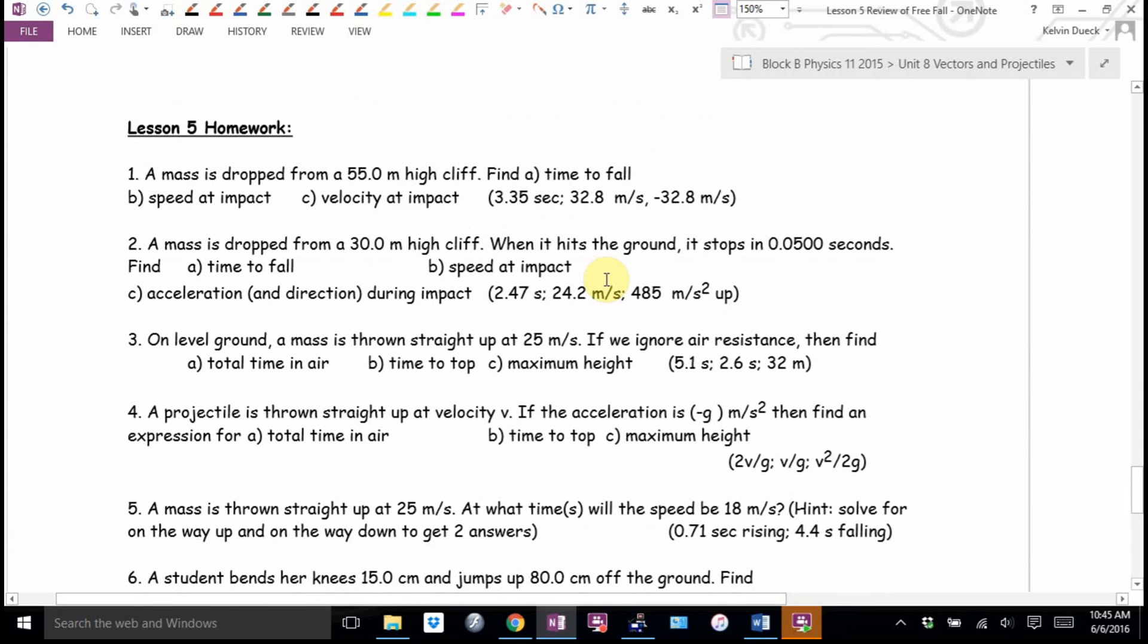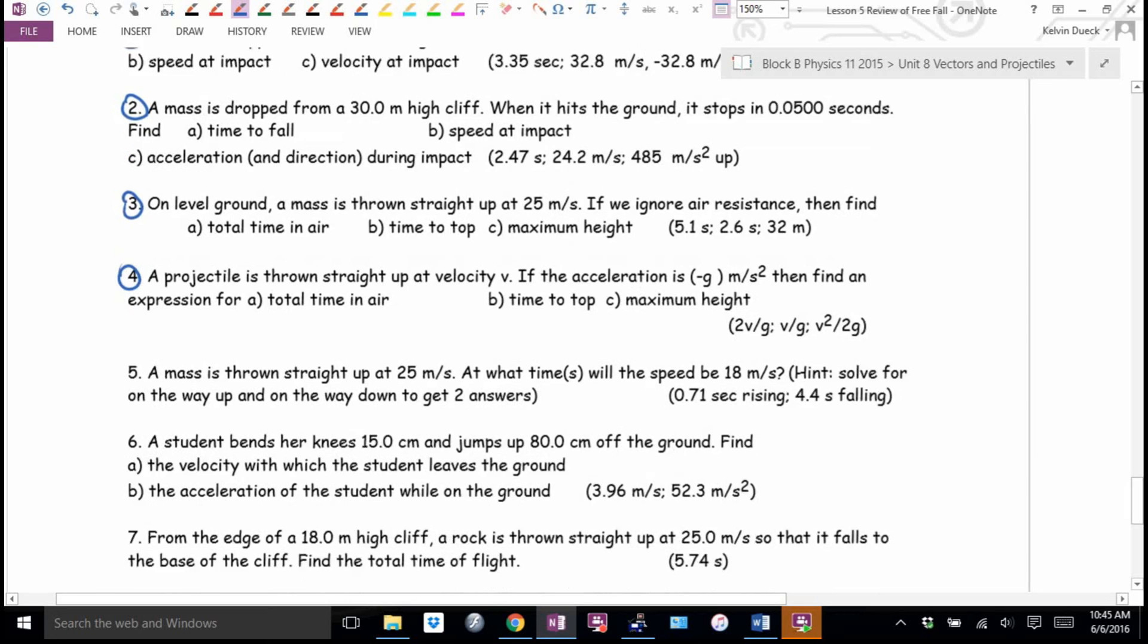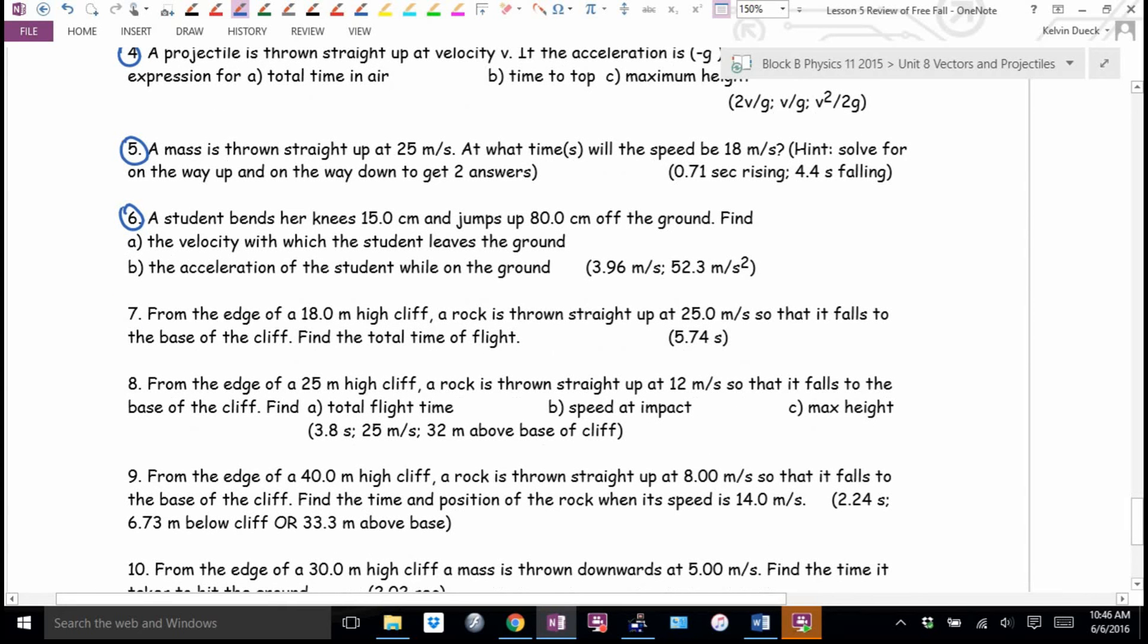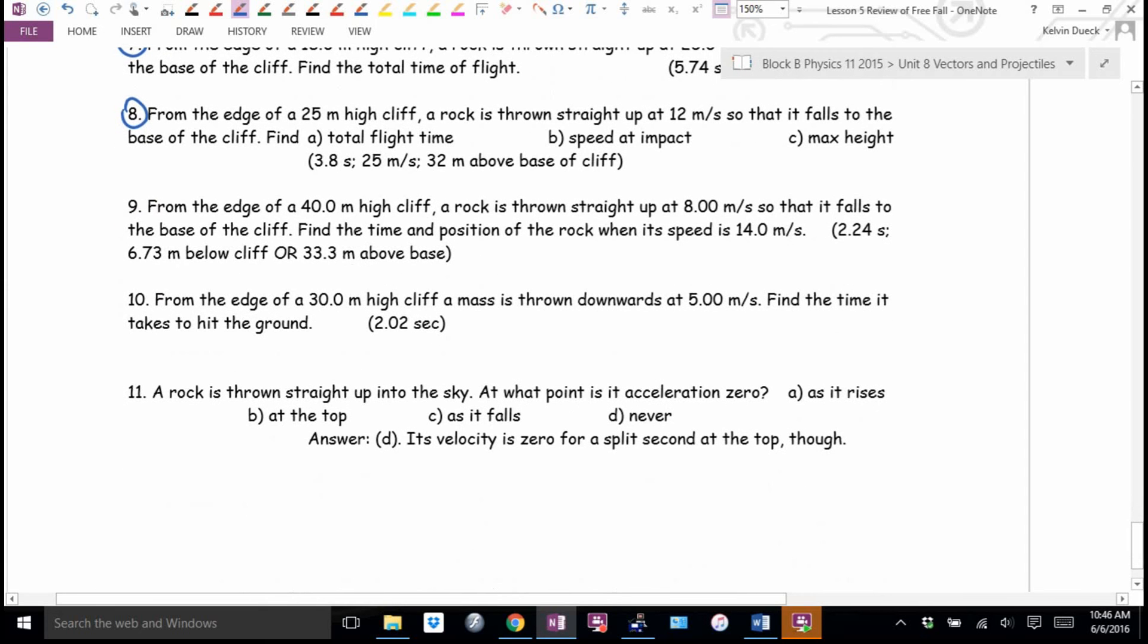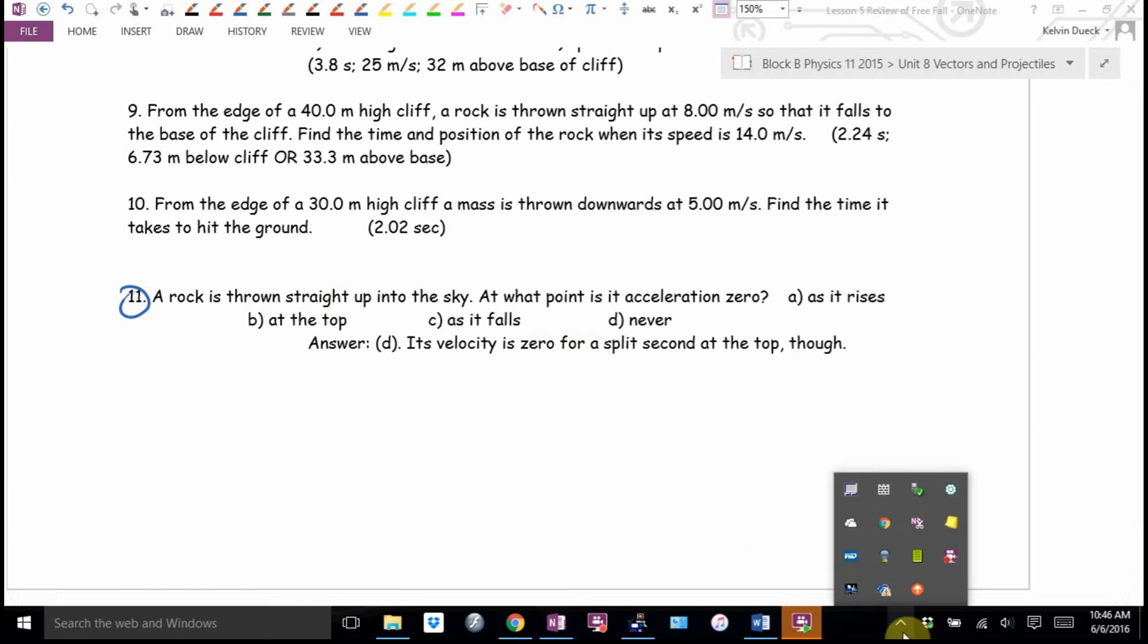What's your homework? You can try number one. This is all good review for your final. Number two. Three and four. Four is asking you to do it algebraically. Five is good. Six is what we just did. Seven is good. You've assigned everything so far. Eight is good. I'm going to skip. Skip 10. 11 is good. Got lots of time to get this done. And if you have any other missing homework or assignments, you can work on those too.